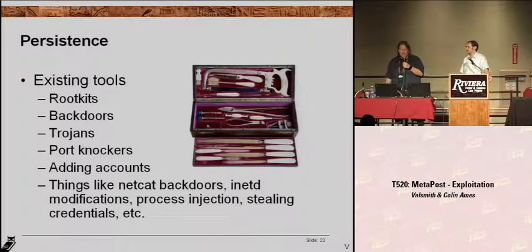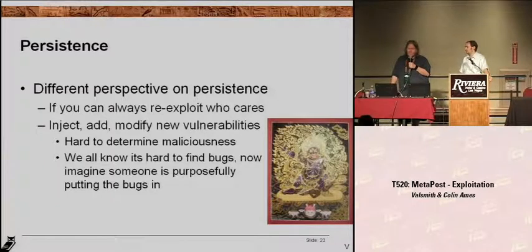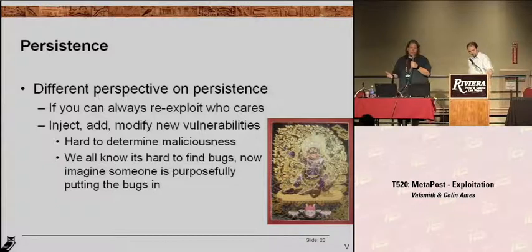There are all kinds of existing tools to help you maintain persistence, but they're conventional. The existence of one of these things on your system tells the target that they've been hacked. What we really prefer to do is inject, add, or modify new vulnerabilities into a target. It's really hard to determine maliciousness when the system just has a bug and they're not aware of it. If they discover the bug, it's not like discovering a rootkit — when you see a rootkit, it's like, oh crap, I've been hacked. But if you discover a vulnerable piece of software, have I been hacked or what's the deal? It's very difficult — if you've watched other talks, people are writing fuzzers to find bugs. Now imagine someone is purposely putting bugs in the code — that would be very difficult to detect.